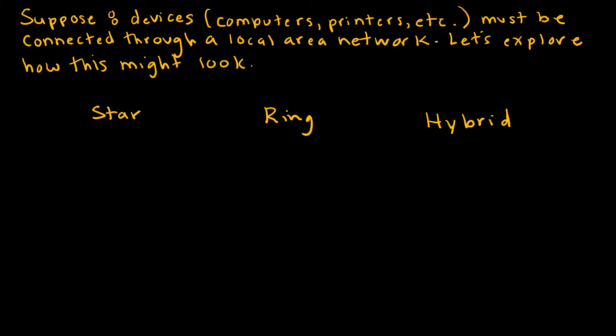So this will resonate with all of my computer people out there. Suppose we have eight devices, computers, printers, etc., that must be connected through a local area network. And I just want to look at some of the ways that this might be done. So one way that it might be done would be with my eight out here. And then like we had talked about before, kind of like our wheel, but instead of a wheel, we're not going to connect any directly to one another. We're just going to connect everything to the middle. So that would be one way to set up a network. Obviously, this is a great way. But if this guy goes down, now we've got real problems, right?